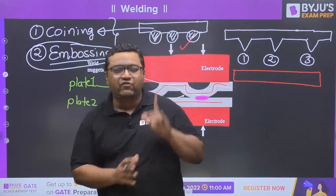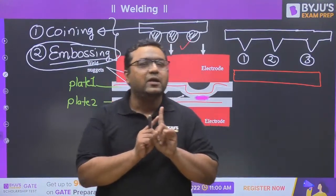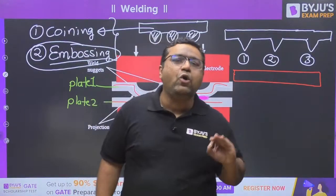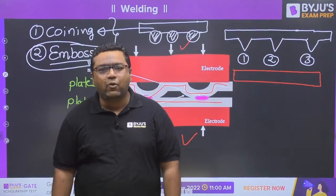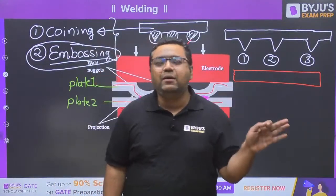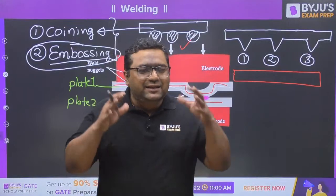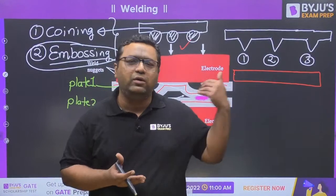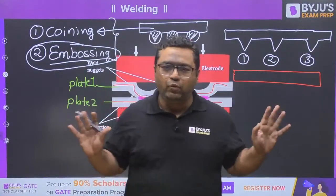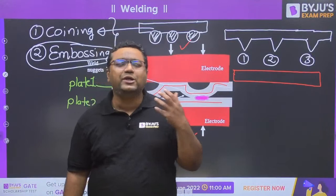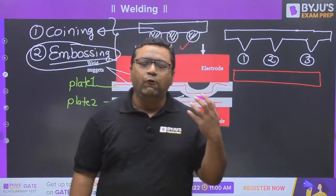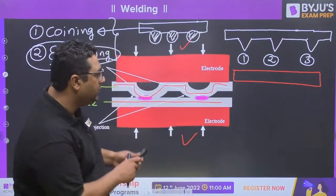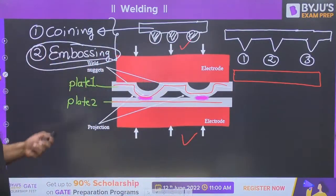In general, we use the embossing process for making projections, because we don't want any change in plate thickness. To summarize the three important points for exam: first, projection welding is multi-spot welding. Second, projections are given either on the plate with high conductivity or with greater thickness. Third, projections are made by the embossing process.